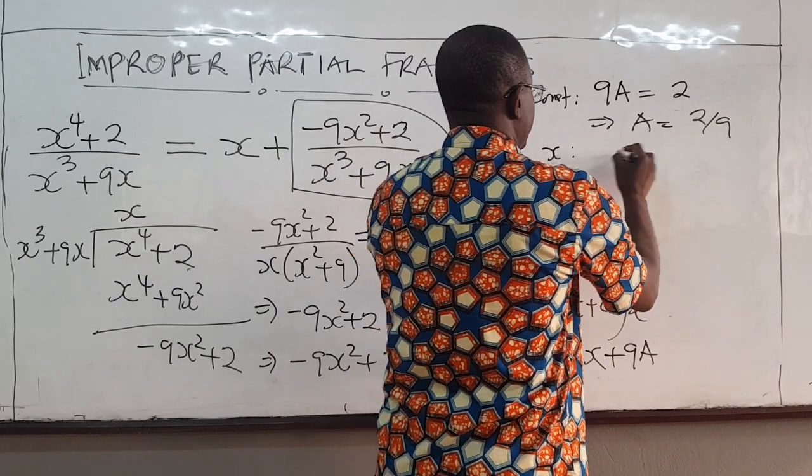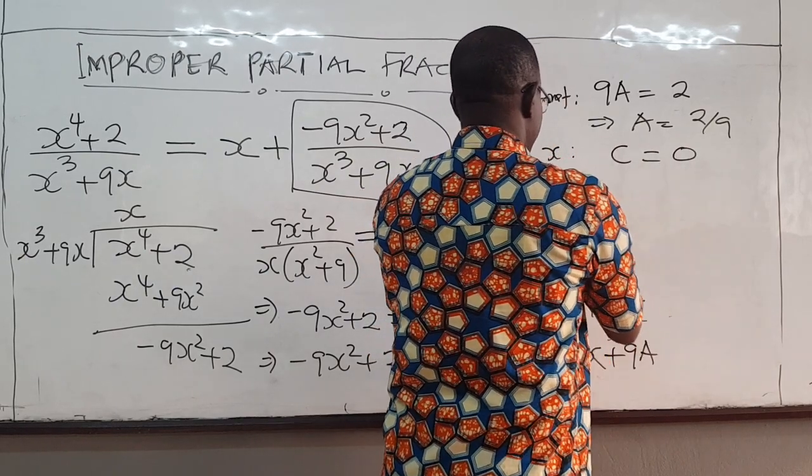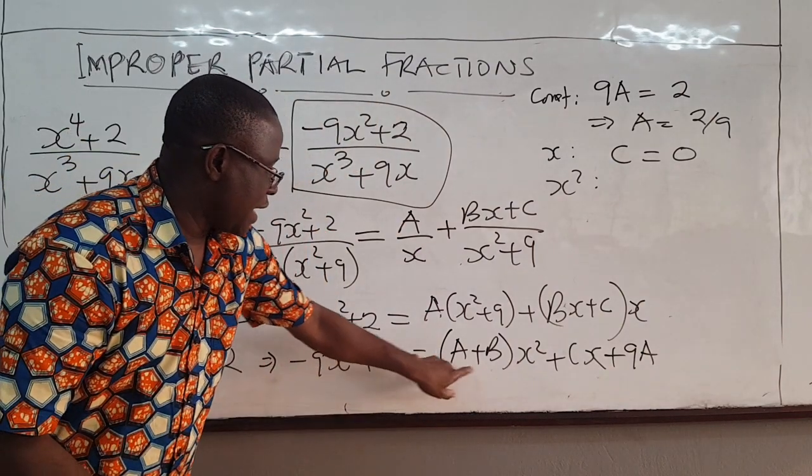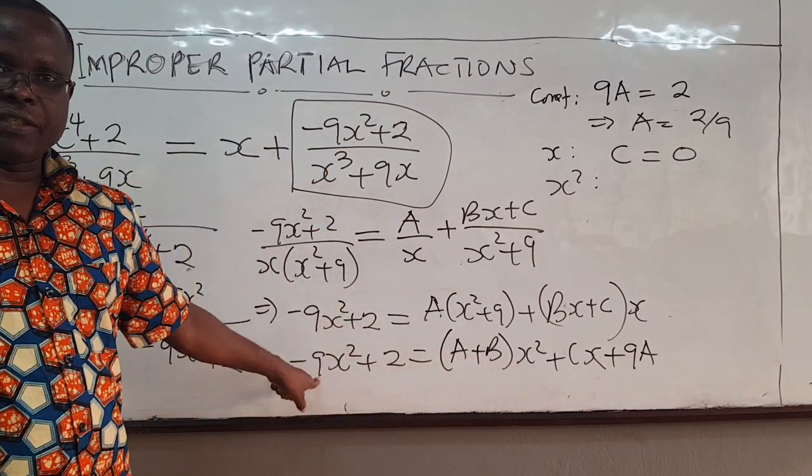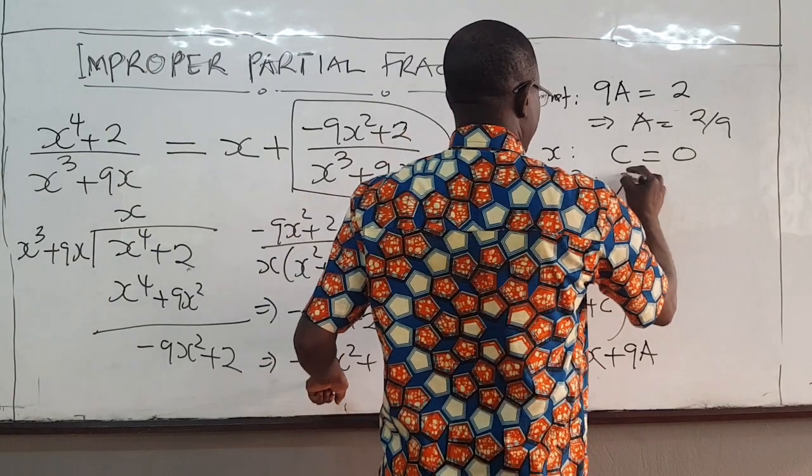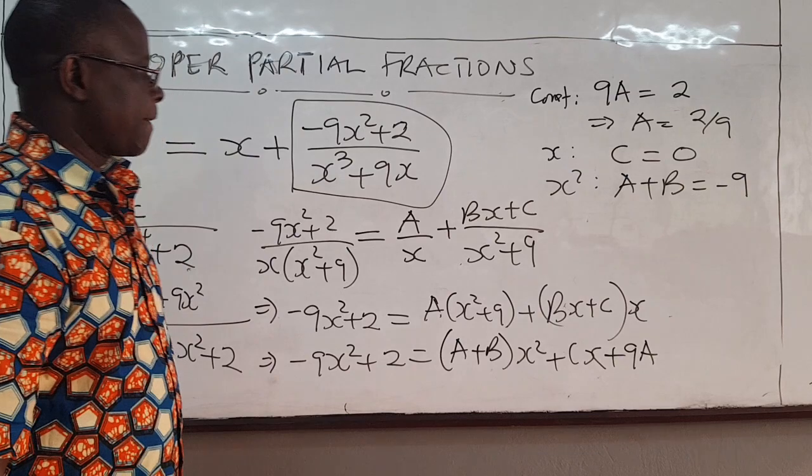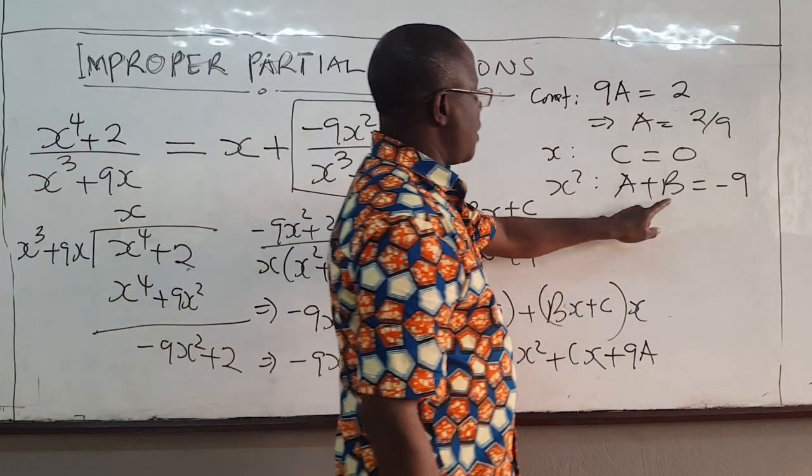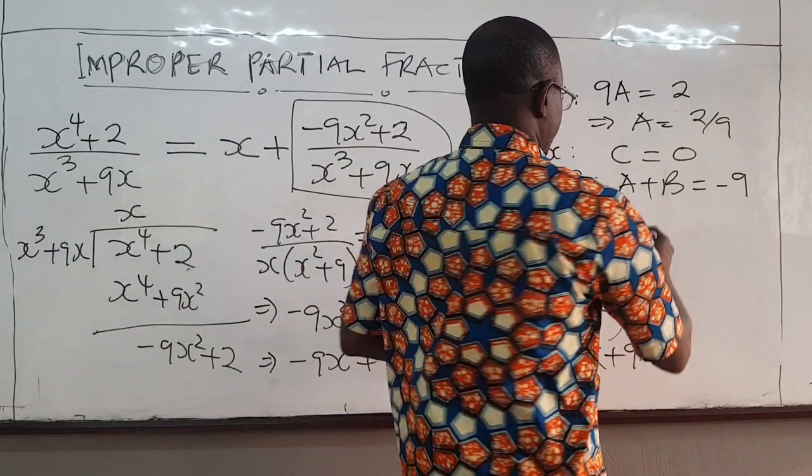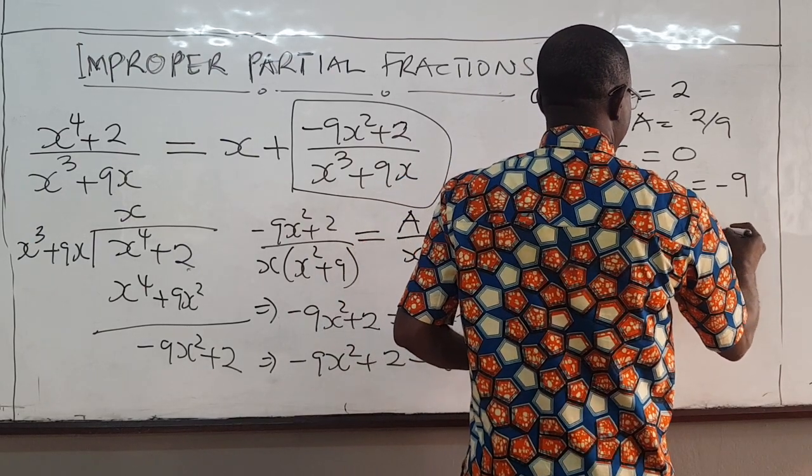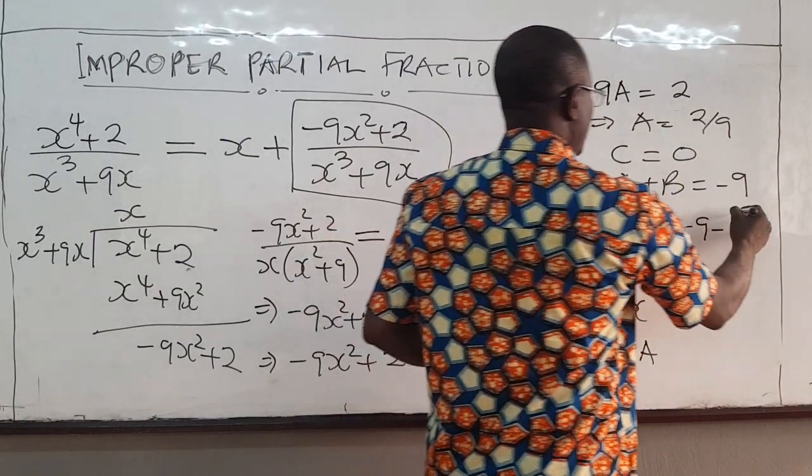If you compare x terms, you see that c is 0. Now you can compare x squared terms. Now we know that a plus b must be equal to negative 9. a plus b is equal to negative 9. We are looking for b. We know what a is. So b would be negative 9 minus a. a is 2 over 9.